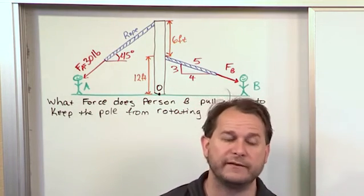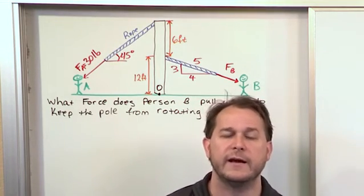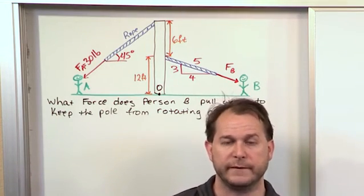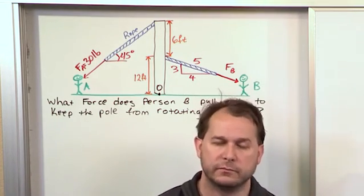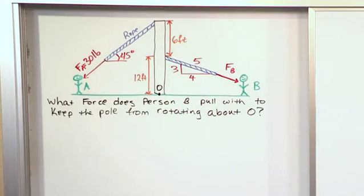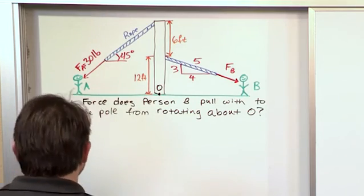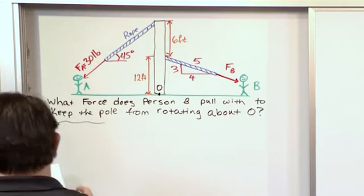So basically the moment due to the horizontal forces, the moments have to be equal and opposite so that the thing doesn't move. And then the vertical force, a similar thing needs to happen there. So the way to write that down mathematically...